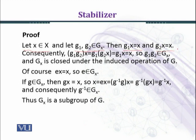So we shall get g1x equals x and g2x equals x because g1, g2 belong to GX. Consequently, (g1g2)x equals g1(g2x). Since g2x equals x, this equals g1x, which equals x.